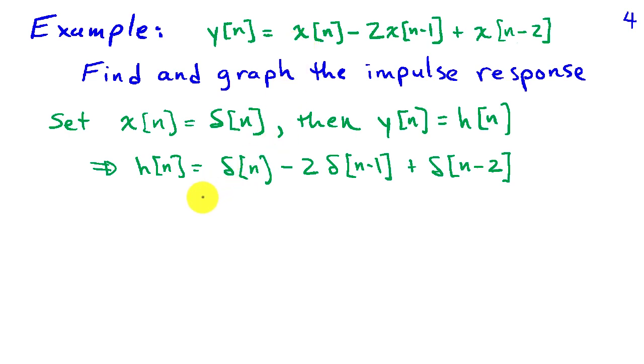So replacing x of n with delta of n, we obtain the impulse response, h of n, as delta of n minus 2 delta of n minus 1, plus delta of n minus 2.